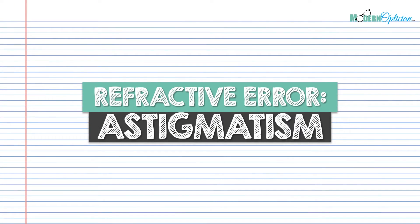Welcome to the lecture on astigmatism. Over the last couple of weeks, we've talked about normal vision, myopia, and hyperopia. We've talked about all the different links between anatomy and optics that get behind the mechanism of how these refractive errors work, how they manifest themselves, and basically what you should know as an optician. We continue that trend today with astigmatism, another one where a lot of students struggle.